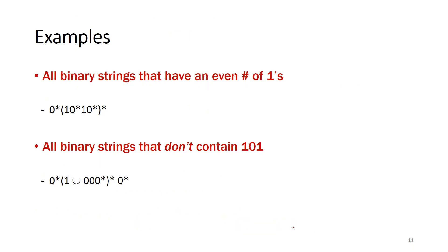We have more examples here. The first one: all binary strings that have an even number of ones. For that, we have this part - it has two ones.